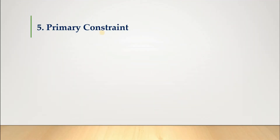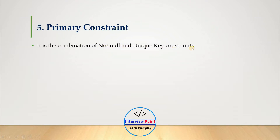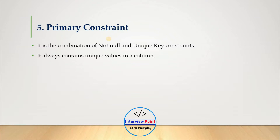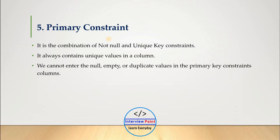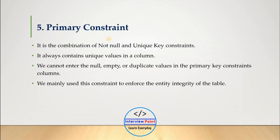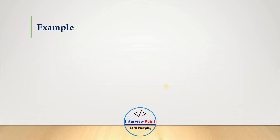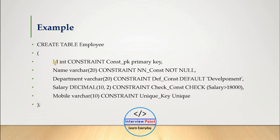Now let's understand the primary key constraint in SQL Server. The primary key constraint is the combination of the NOT NULL constraint and the unique key constraint. The primary key column must have unique values and will not allow any NULL value in that column. We cannot enter null, empty, or duplicate values in a primary key column. We mainly use this constraint to enforce the entity integrity of the table.